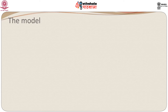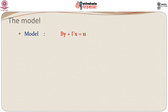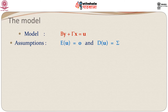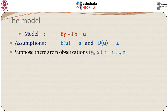Let us go back and look at the simultaneous equation models. We have By plus Gamma x equal to u, where y are the endogenous variables. There are capital G endogenous variables, and x are the exogenous variables, where we have capital K exogenous variables. B and Gamma are the coefficient matrices and u is the error or disturbance term.